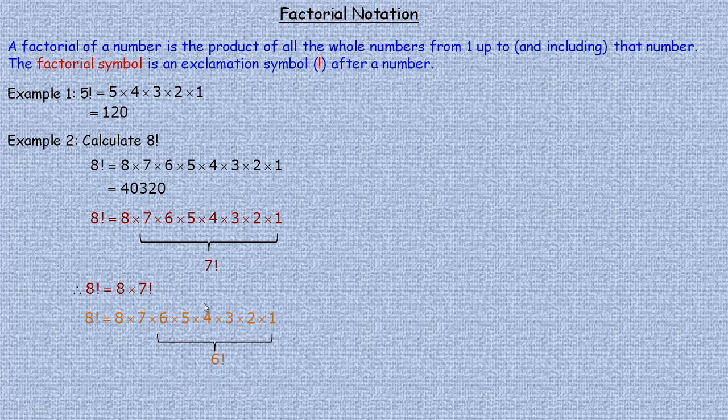Similarly, if I wanted to write out from 6 down to 1 as 6 factorial, then 8 factorial would be 8 times 7 times 6 factorial. That's one of the properties of factorial that's useful sometimes when you're trying to simplify expressions involving factorials. 8 factorial can be written as 8 times 7 times 6 factorial.